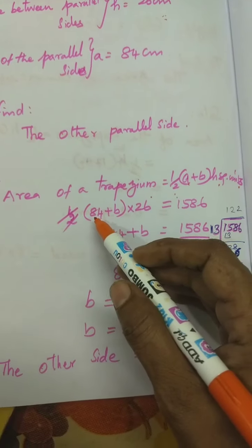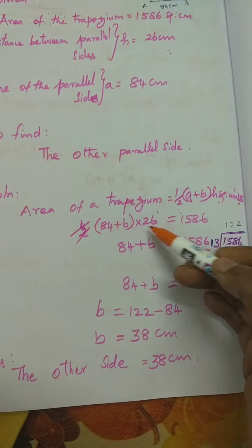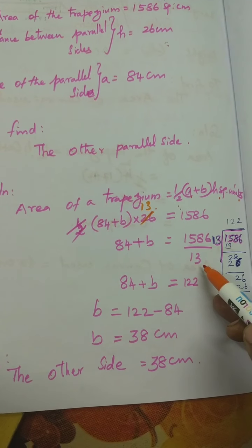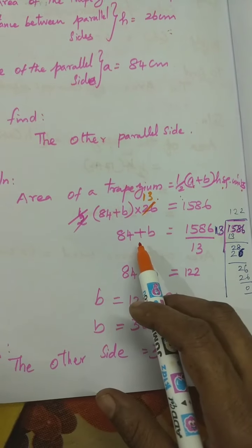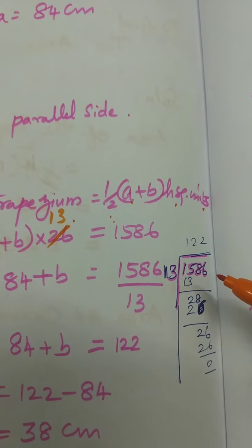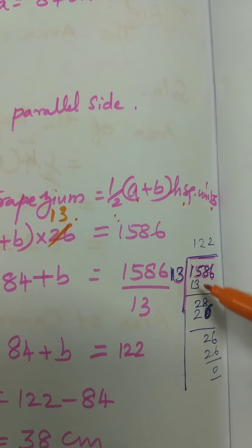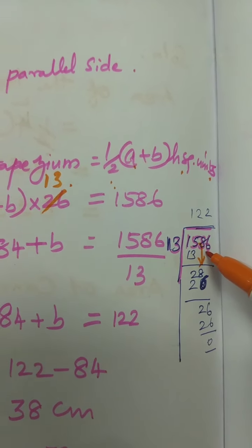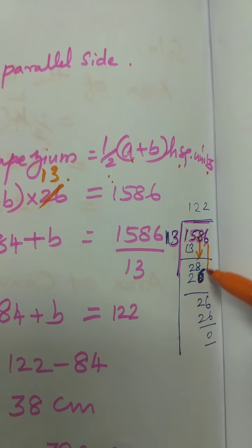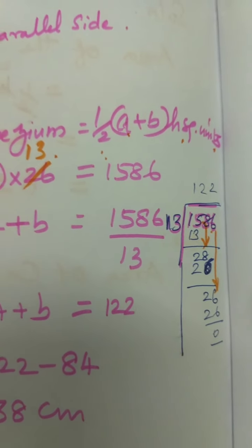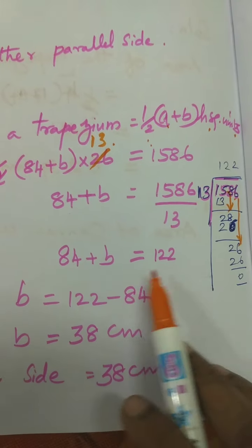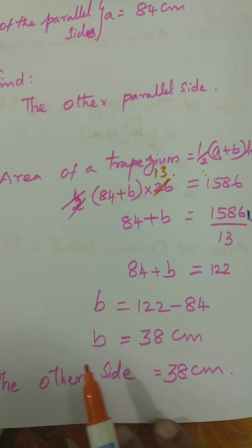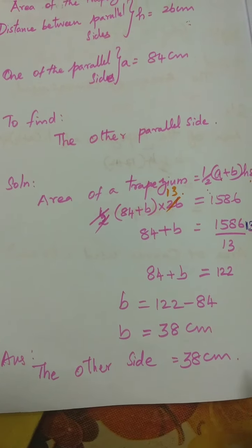You substitute: half into 84 plus B into 26 equals 1586. Cancel 2 — this becomes 13. Bring 13 to the denominator on the other side. Divide 1586 by 13: 13 ones are 13, get down 28, 2 times 26, subtract to get 2, bring down 6 gives 26, 2 times. Result is 122. So 84 plus B is equal to 122, then B is equal to 122 minus 84. B is equal to 38 cm. The other side is equal to 38 cm.